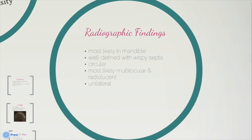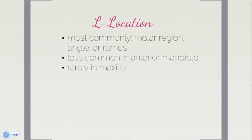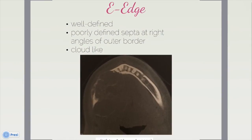In the oral cavity, the most common areas for an aneurysmal bone cyst to appear are in the molar region of the body, the ramus of the mandible, and potentially the anterior region, though less commonly. The lesion appears in the mandible much more than the maxilla, with a ratio reported as high as 3 to 1. The lesion's edge is normally well-defined; however, poorly defined wispy septa can be found at right angles to the outer expanded border, making the lesion almost cloud-like.